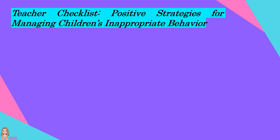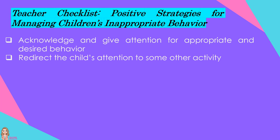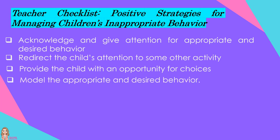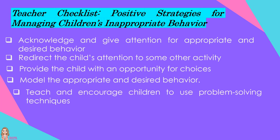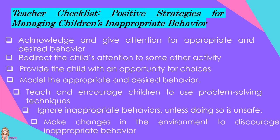Teacher's checklist on positive strategies for managing children's inappropriate behavior: Acknowledge and give attention for appropriate and desired behavior. Redirect the child's attention to some other activity. Provide the child with an opportunity for choices. Model the appropriate and desired behavior. Teach and encourage children to use problem-solving techniques. Ignore inappropriate behaviors unless doing so is unsafe. Lastly, make changes in the environment to discourage inappropriate behavior.